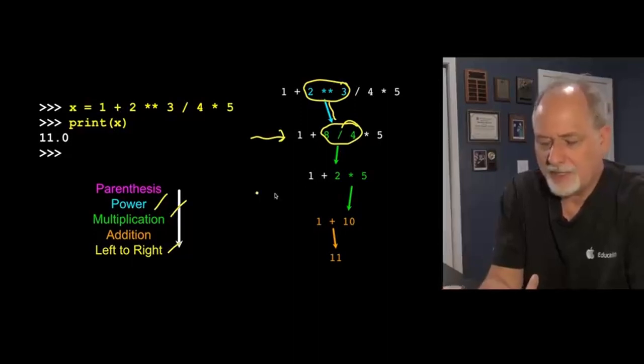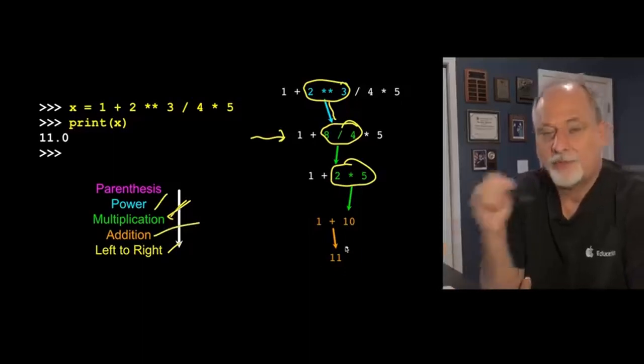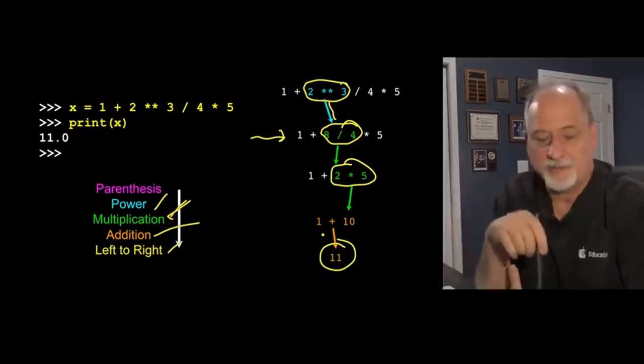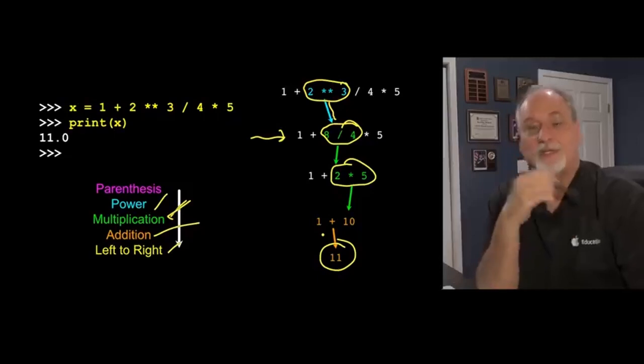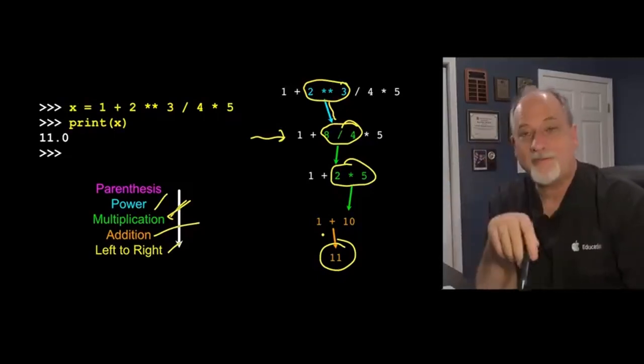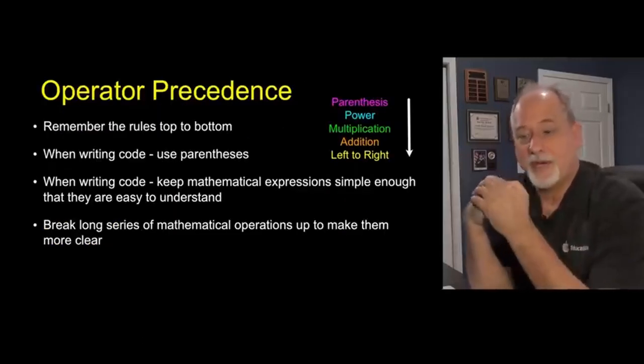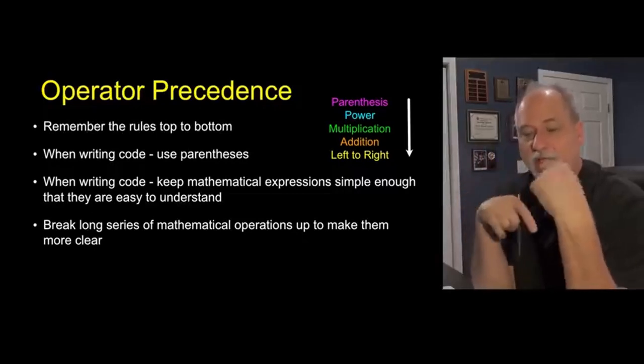There is both multiplication and division, they're equal, they're at the same level, and so they're done left to right. 8 divided by 4 happens before 4 times 5. So then this gets rewritten to be 2, 1 plus 2 times 5, and this one, multiplication is the top one, so that does this next, 2 times 5 becomes 10. And then 1 plus 10, addition is the lowest thing, and that's how we end up with 11.